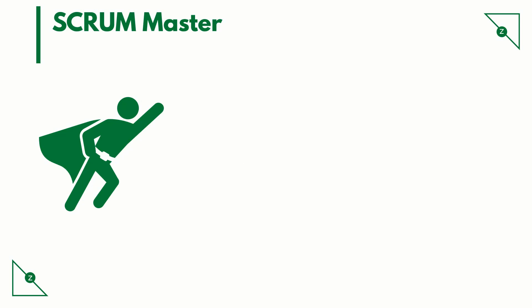Scrum Master. The scrum master can be compared with a project manager in the regular sense, except that his approach is not top-down in terms of authority. He is rather a facilitator and a helping hand for the team. He protects the team from distractions. The scrum master makes sure that whatever the team has committed for the sprint, they achieve it. He shields the team from external influences.